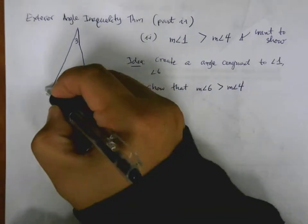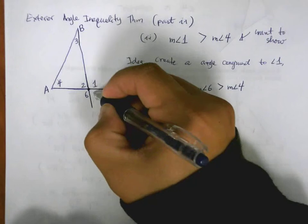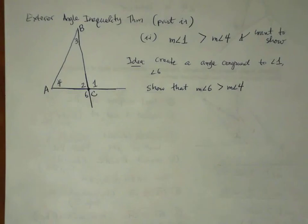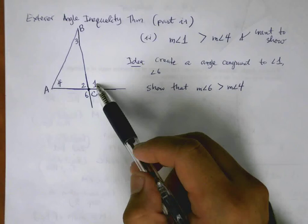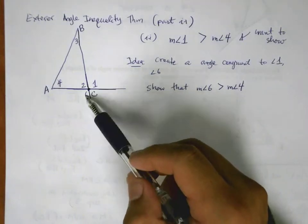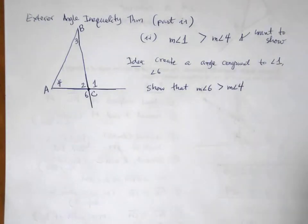So this is still side A. This is still B up here. This point here, that's still C. Now you can see that since 6 and 1 are vertical angles, they're the same measure. So if 6 is bigger than 4, then 1 must also be bigger than 4.